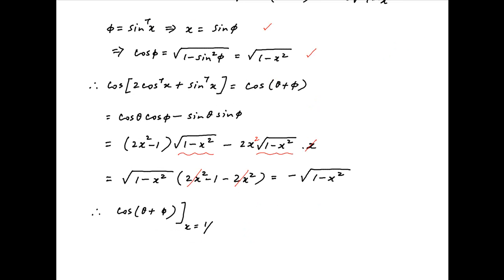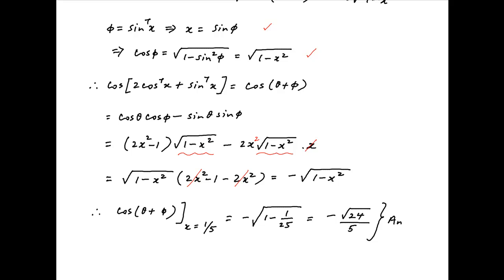Therefore the value of the given expression when x is equal to 1 upon 5 is equal to minus of square root of 1 minus 1 upon 25, which is equal to minus square root of 24 upon 5, which is the required answer.